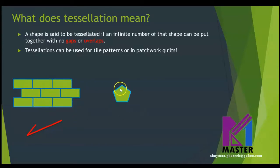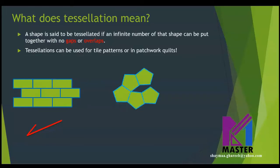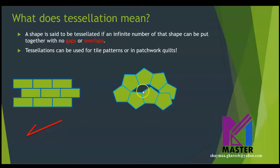What about this shape? It's a regular pentagon. Can this pentagon tessellate or not? It's a regular pentagon, which means all sides are equal and all angles are equal. Let's put many of this shape together and check what will happen. Look what happened here — there is an overlap and also there is a gap. So we can say that regular pentagons cannot tessellate, but rectangles can tessellate.